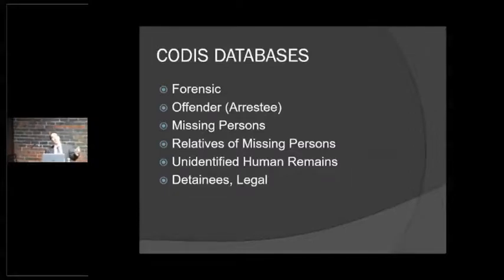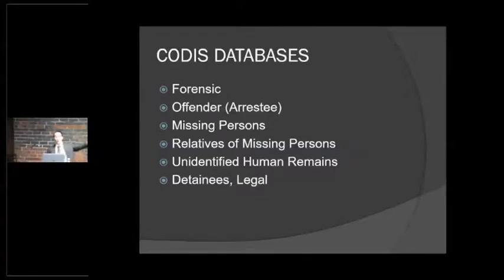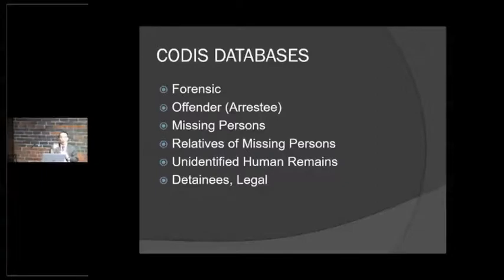We have multiple databases in CODIS. Most people only hear of the forensic database and the offender database. In Iowa, our offender database is only for individuals convicted of crimes — felonies, sex crimes, and most aggravated misdemeanors. Many states — over 30 — have arrestee legislation, so if you're arrested for specific crimes you have to provide a DNA sample. New York, if you're arrested for anything, you go into their database. Also present are a missing persons database, a relatives of missing persons database, and an unidentified human remains database. If we find a body in rural western Iowa that's been there 15 years, we can run DNA testing and upload it to the unidentified human remains database. Family members of missing persons can also provide their DNA to help make connections.